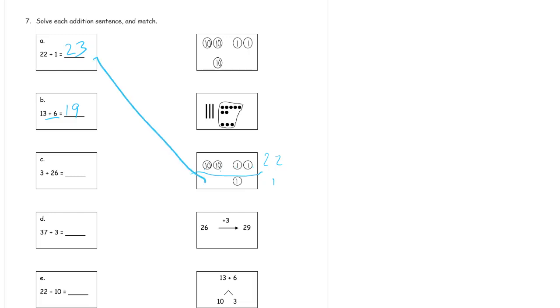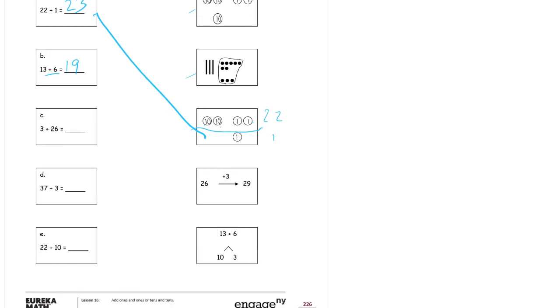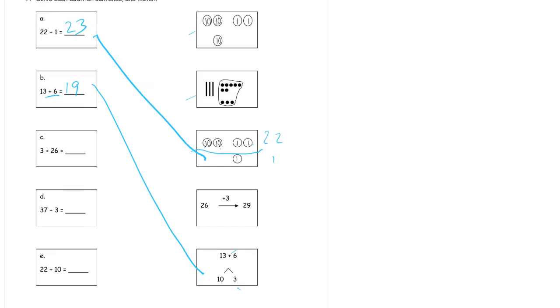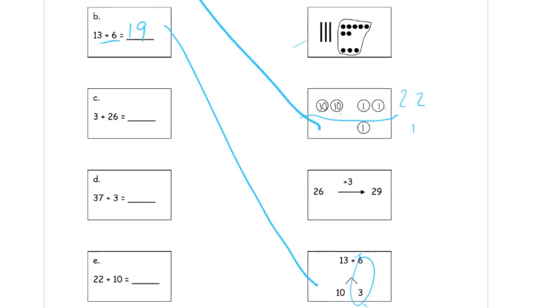And then this 19 is 13 plus 6. So we need to find a 13 somewhere. This one has too many 10s. That has too many 10s. This starts with a 26. That's no good. Here's the one that starts with a 13 plus 6. We'll split the 10 and the 3 apart to solve that. Just the way I did it, adding the 1s first. That's the idea of doing it that way.